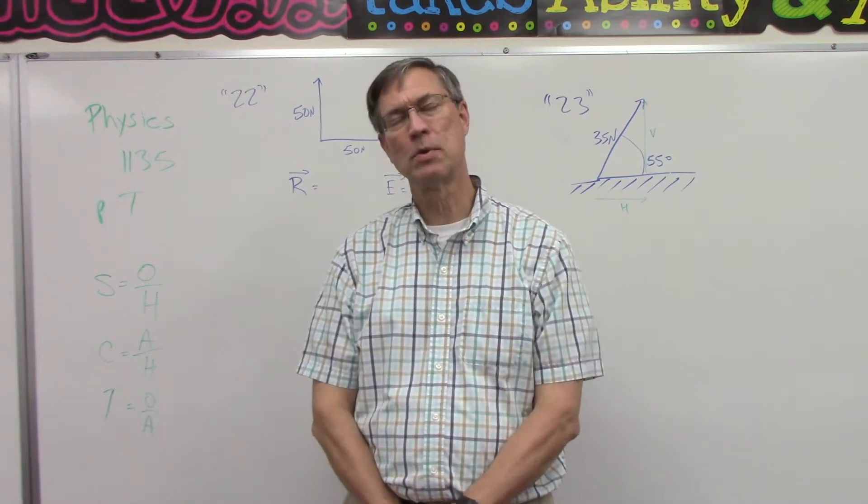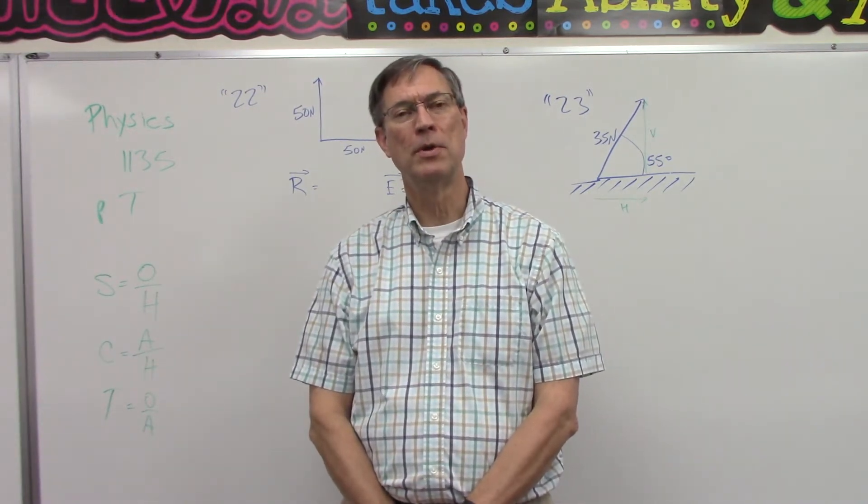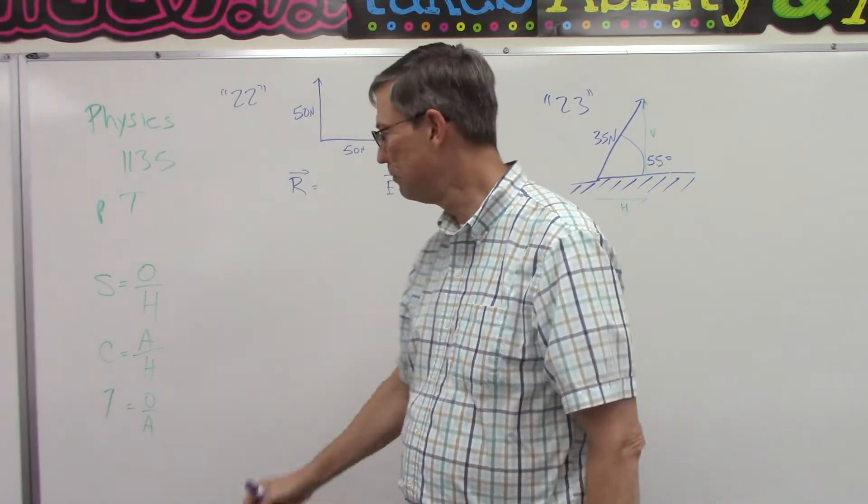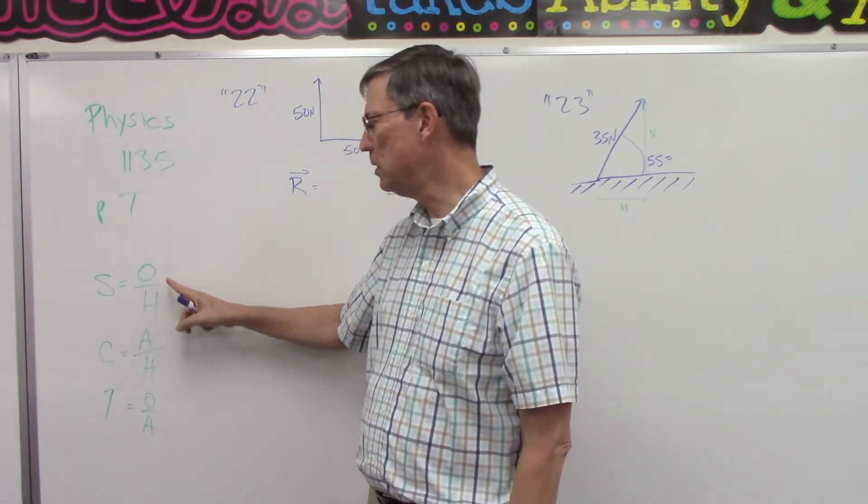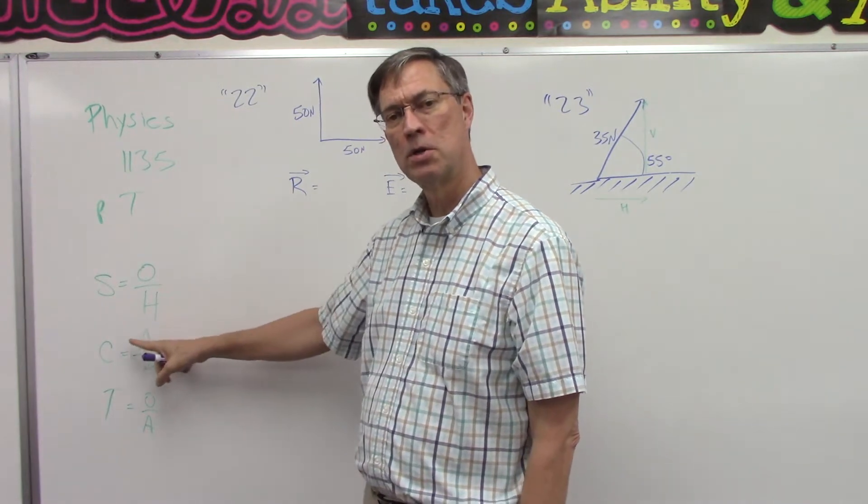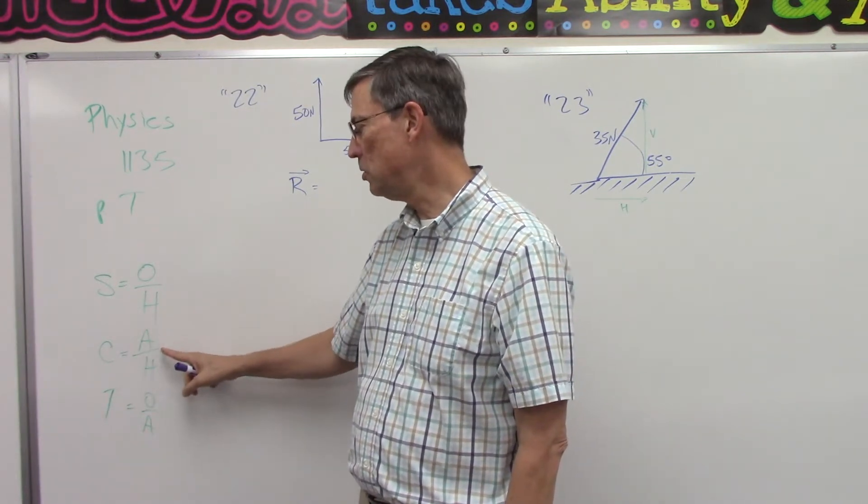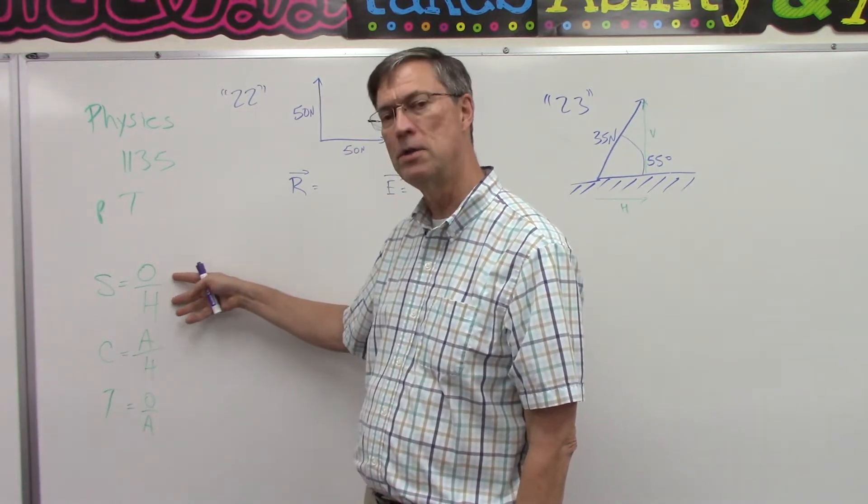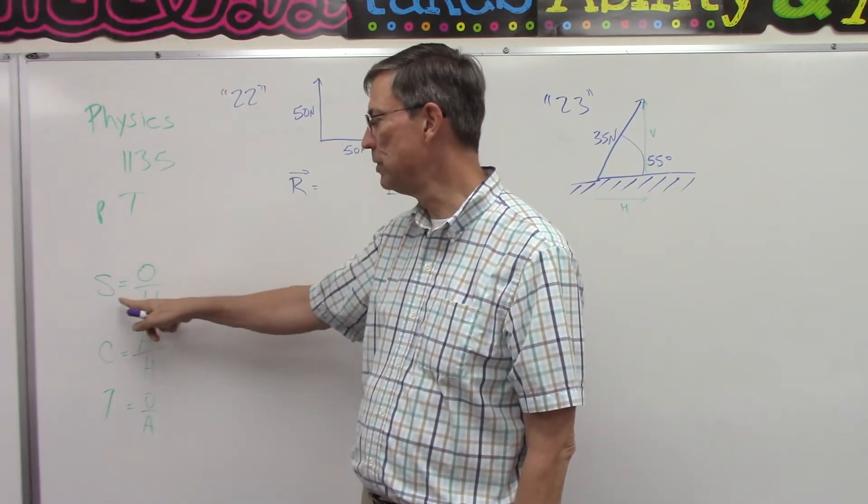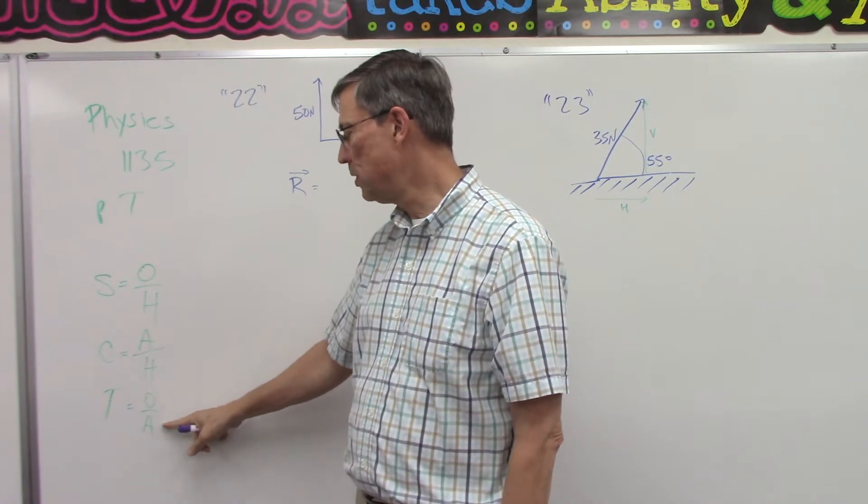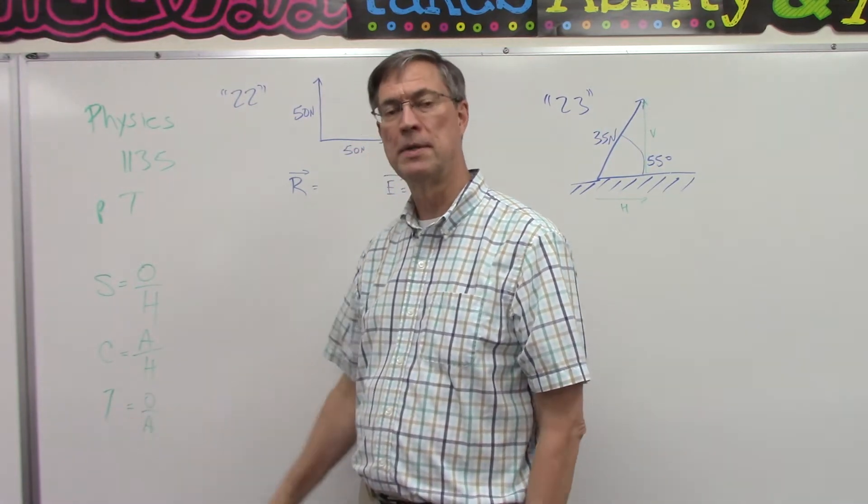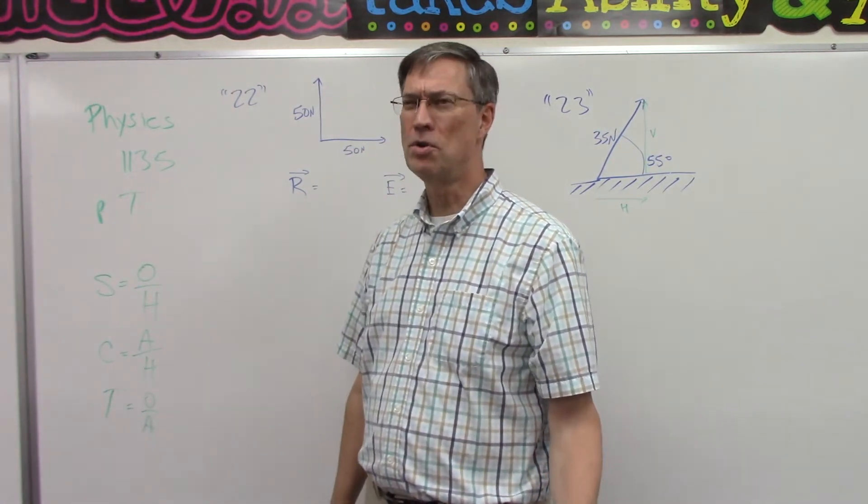Hopefully some of this will come back to you as we work through some of these problems together and you'll remember these relationships. Sine is opposite over hypotenuse. Cosine is adjacent over hypotenuse. So these are the sides. The relationship between the sides equals a decimal number. And tangent is opposite over adjacent, which is again a decimal number. There is a chart in the pace,